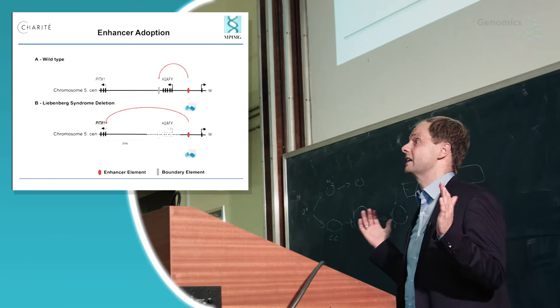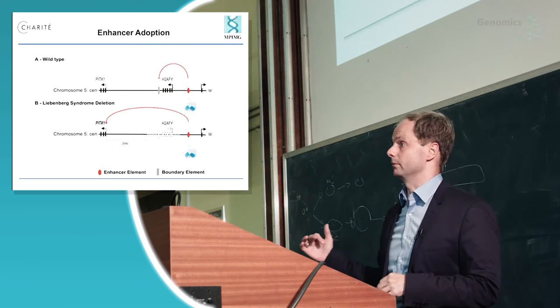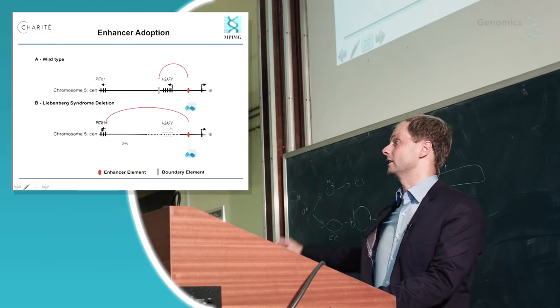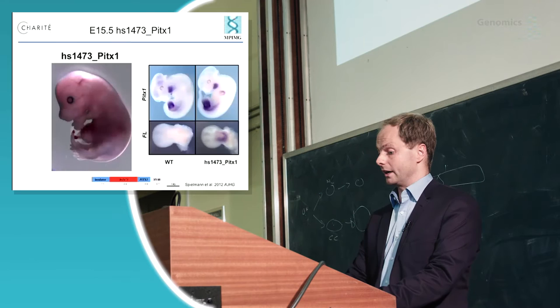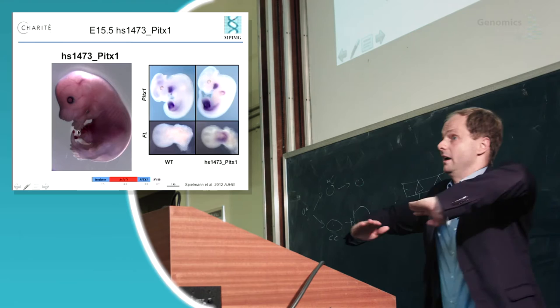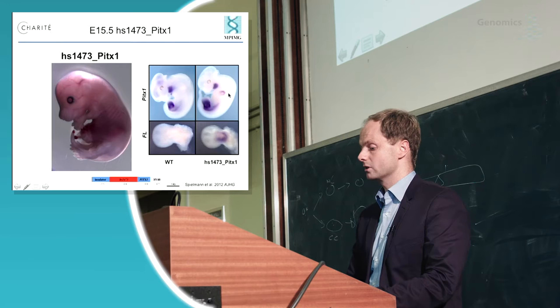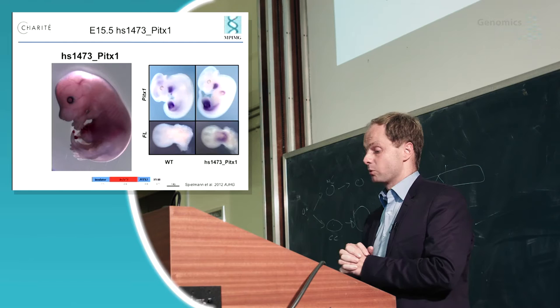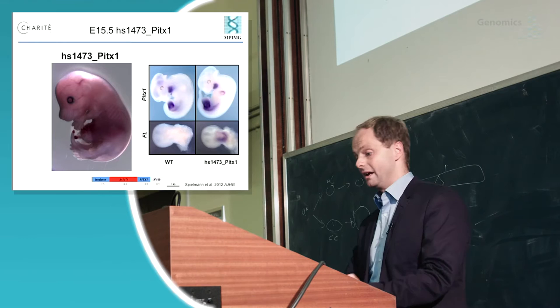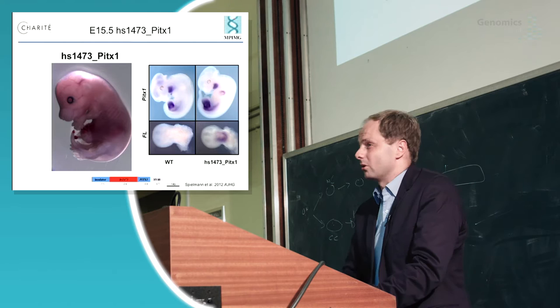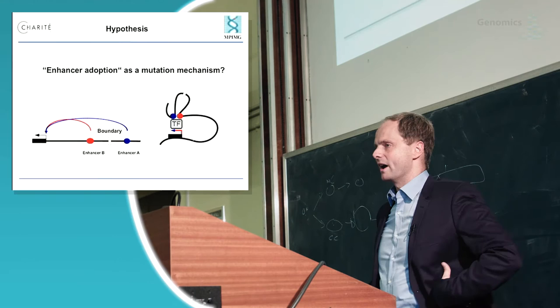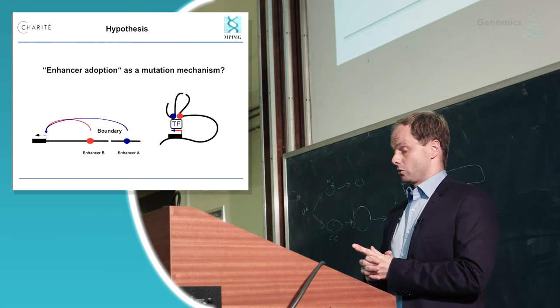It sounded like a good hypothesis, but we really didn't have a way to prove it. Before CRISPR came along, I did a dirty experiment: I took this enhancer, cloned it right in front of PITX1, and made a transgenic mouse to see if my hypothesis was true. The mice looked exactly like our patients — they had abnormal arms, and also showed misexpression of PITX1 in the fore-limb. This was nice for us, but still pretty anecdotal. So we decided we have to find out if enhancer adoption is a more common mutational mechanism that needs to be taken seriously.